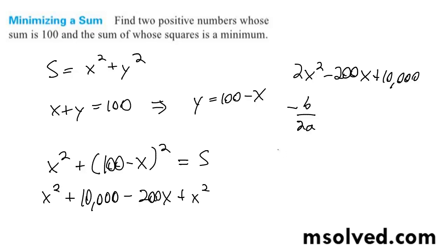And what we're going to have here is opposite of b, which is going to be 200, divided by 2a, which is 2 times 2, which is 4. So we're going to end up with 50 here.